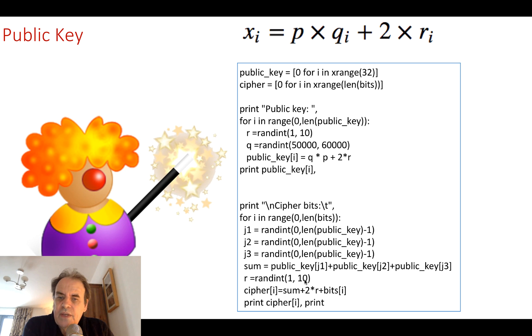So then again we'll take a random value, and then this time we'll add the sum times 2R, which is the random value, and then plus the value of the bits. So the bits are the bit values that we're actually ciphering, and we can print that out.